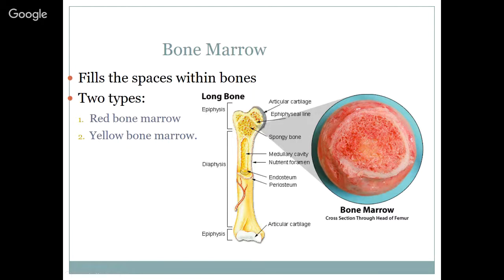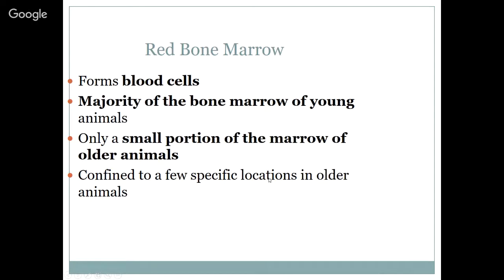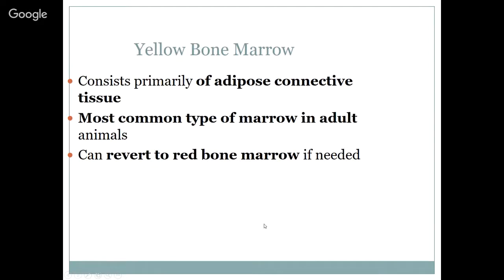Bone marrow fills the space within bones. There are two types. Red bone marrow is of the younger animal — it's active bone marrow. Yellow bone marrow is inactive, and we tend to see it in animals that are a little older and healthy because they don't have to continuously make new bone marrow. Red bone marrow forms blood cells and is the majority of bone marrow of young animals, only a small portion of the marrow of older animals. If the animal has a need for more blood cells to be made, it can regenerate. Yellow bone marrow consists primarily of adipose connective tissue; it's the most common type of marrow in adults and can revert to red bone marrow as needed.